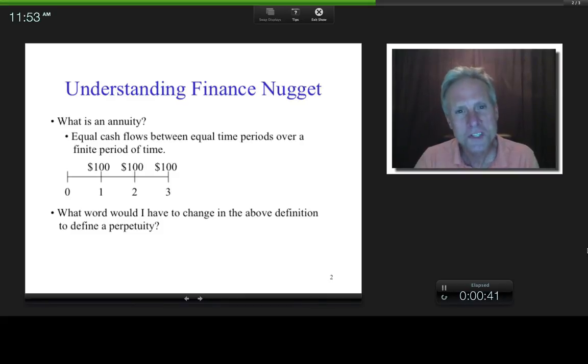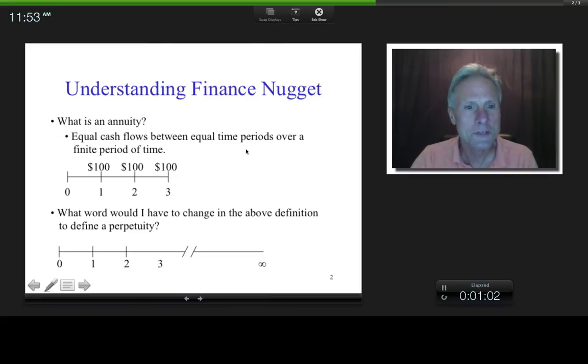Now, what single word would I have to change in this definition up here to turn it into a perpetuity? Well, maybe you've heard of perpetual motion. What is perpetual motion? It's a motion that goes on forever, right? And so, perpetuity is basically equal cash flows between equal time periods over an infinite period of time.